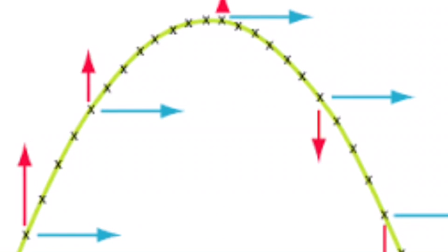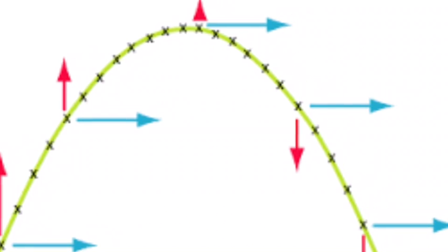Any projectile thrown, such as a ball, can be considered to have a vertical and horizontal velocity component. As shown in this diagram, blue is equal to the horizontal velocity component and red is equal to the vertical velocity component. Throughout the path of the projectile, change occurs only in the vertical direction due to the influence of gravity, while the horizontal component of the velocity will not change.